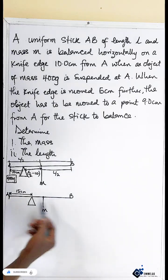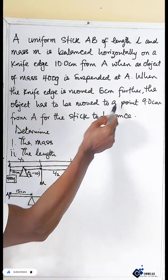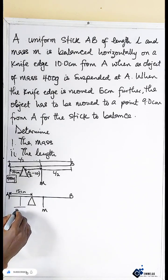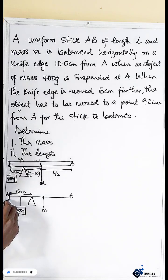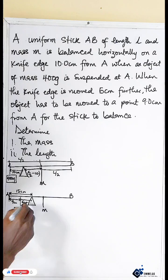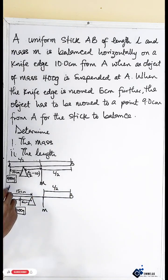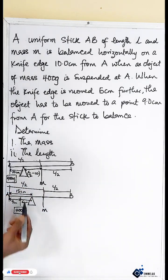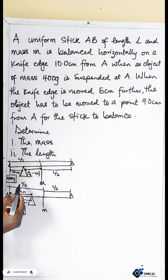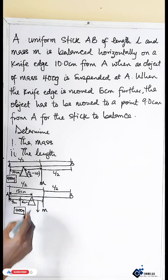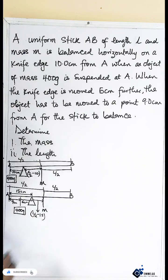For the stick to be balanced in this second case, the object has to be moved to 9 cm from A. This means the 400-gram object is now 9 cm from A. Since the knife edge is at 15 cm from A and the object is at 9 cm from A, the distance from the object to the knife edge is 15 minus 9, which equals 6 cm. And the distance from the knife edge to the center is L/2 minus 15.